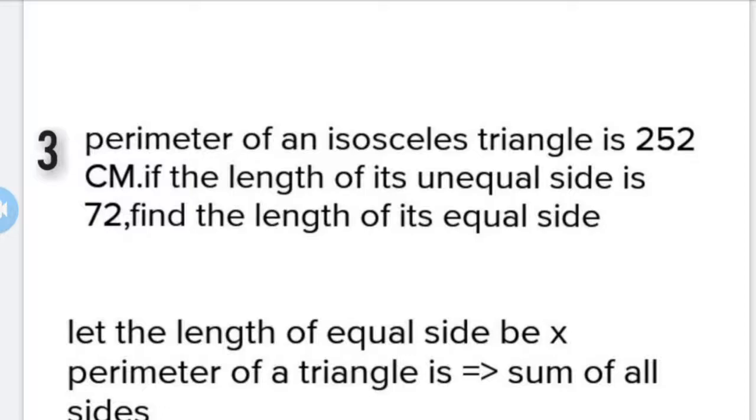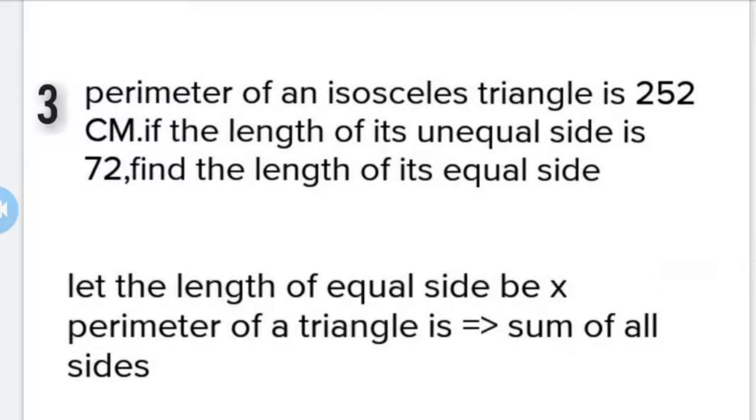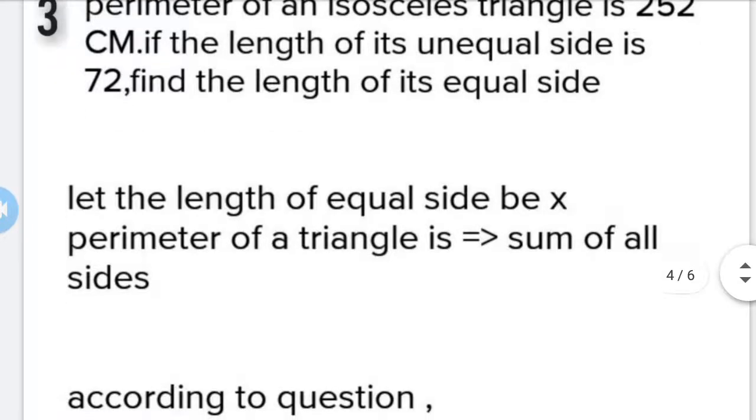The perimeter of a triangle is the sum of all sides. Let the length of the equal sides be x. According to the question, x + x + 72 = 252.